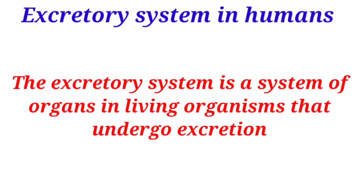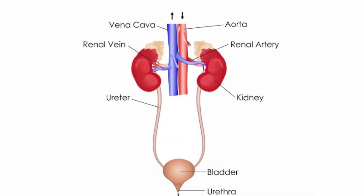The excretory system in humans is a system of organs in living organisms that undergo excretion. The main parts of the excretory system in humans consist of a pair of kidneys, a pair of ureters, a urinary bladder, and a urethra.